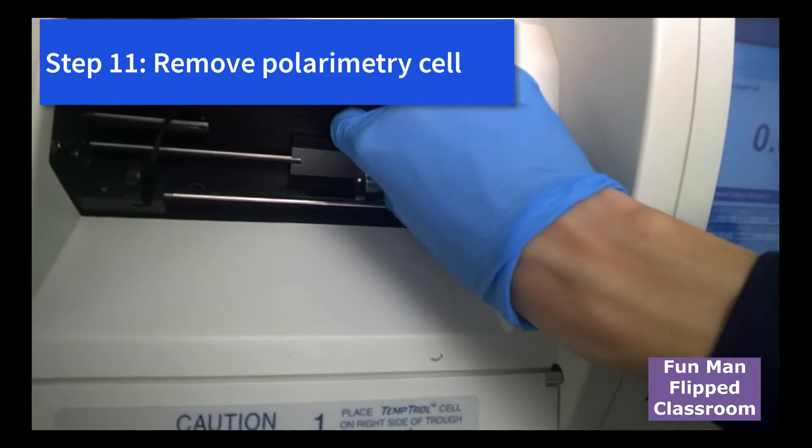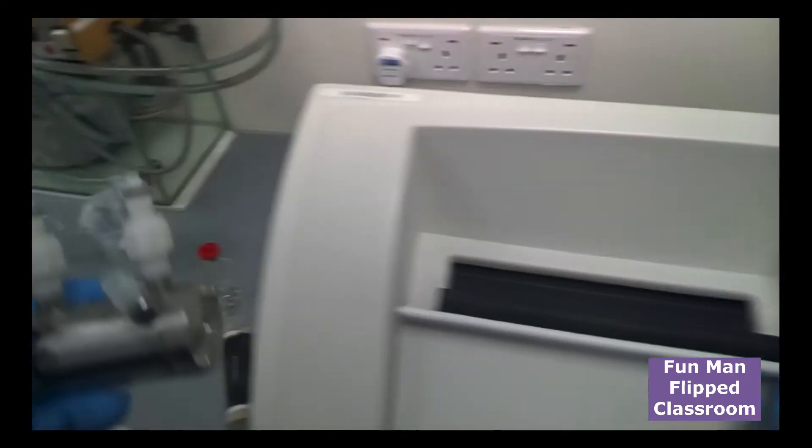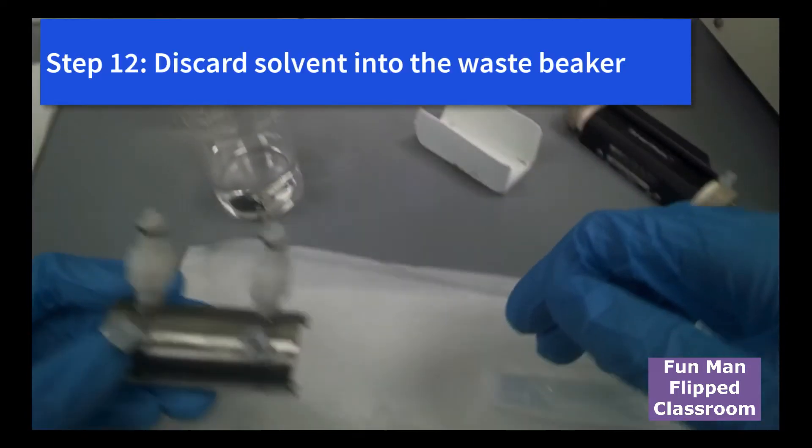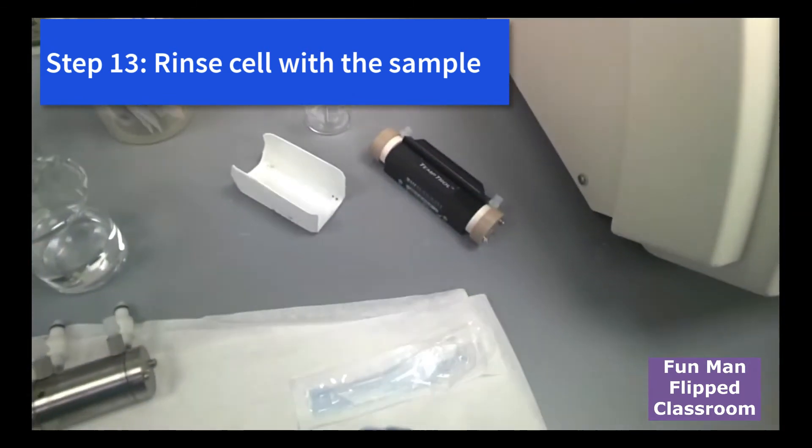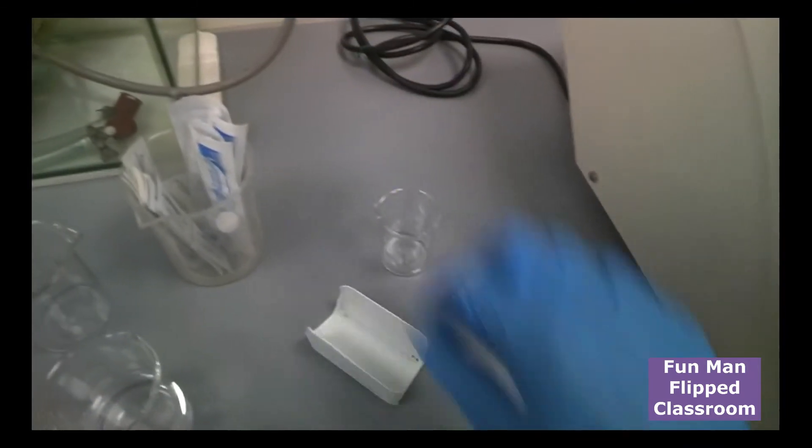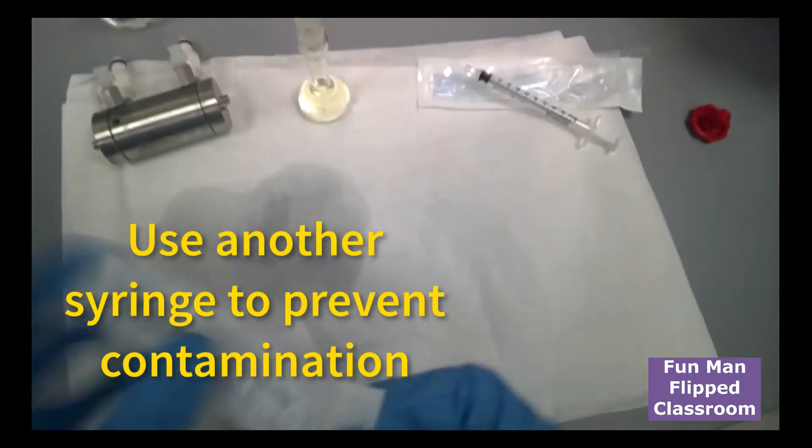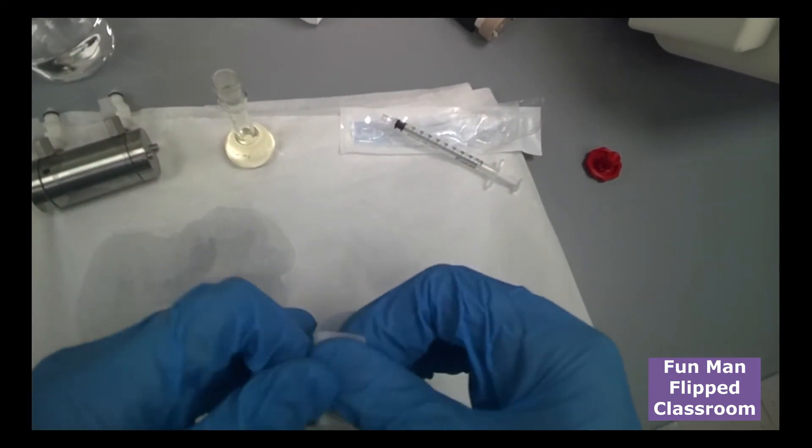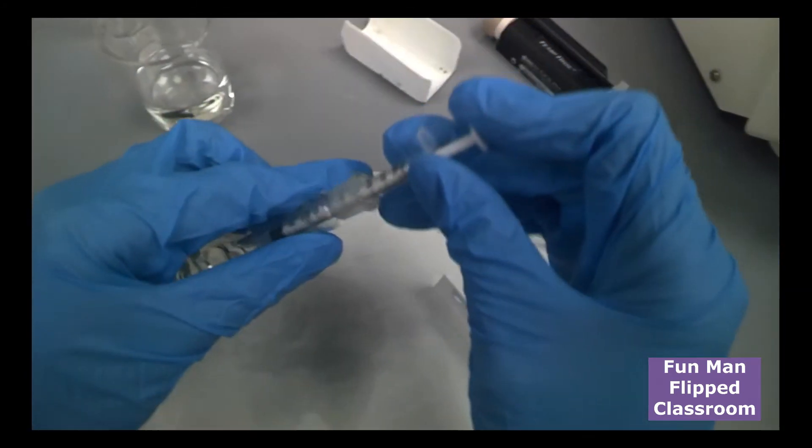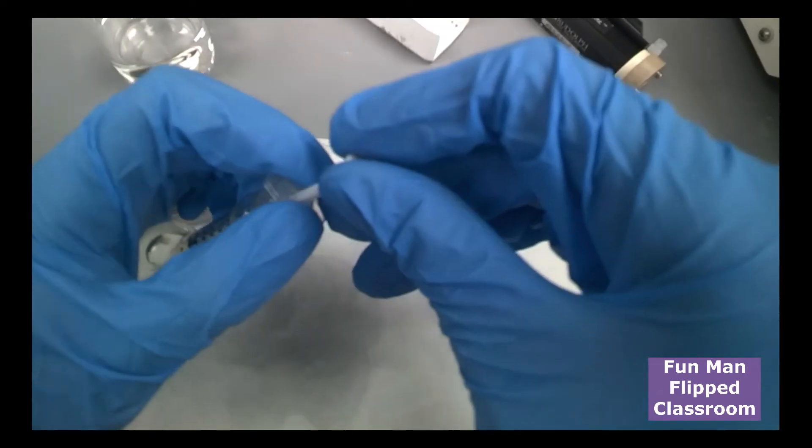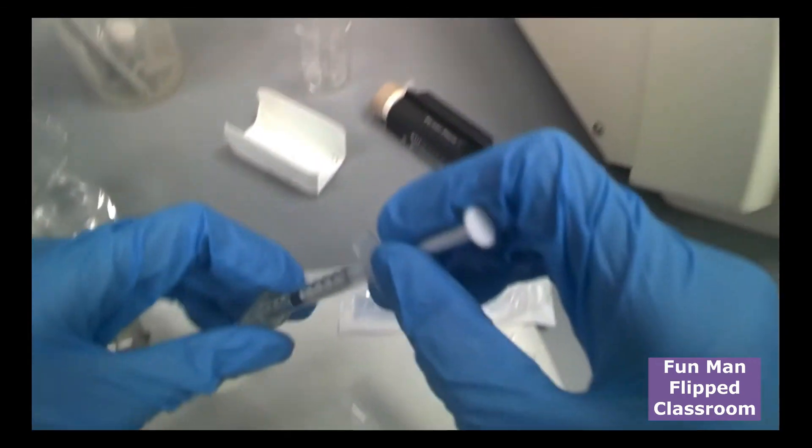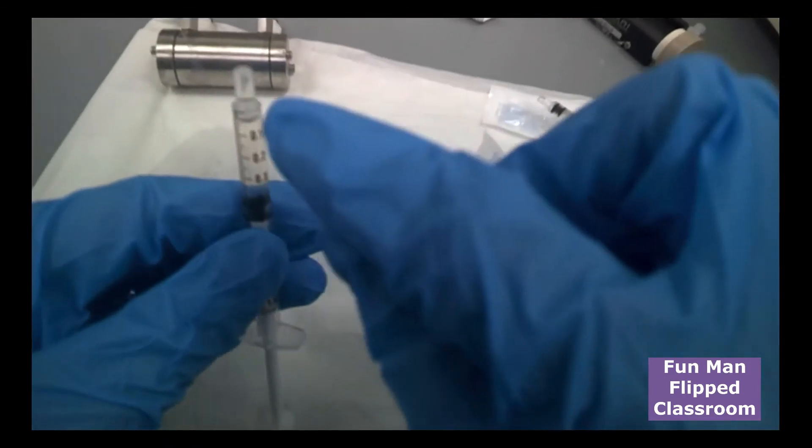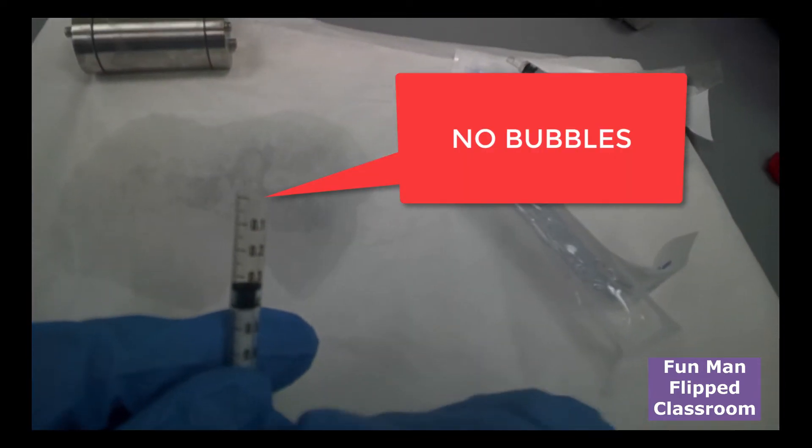So what we do now is we remove the polarimetric cell from the polarimeter. We should use a waste beaker here. Take out the liquid. And we will rinse it with our sample that's already prepared. So we will take out using another syringe. Again, the same thing. Insert. Make sure there's no bubbles.